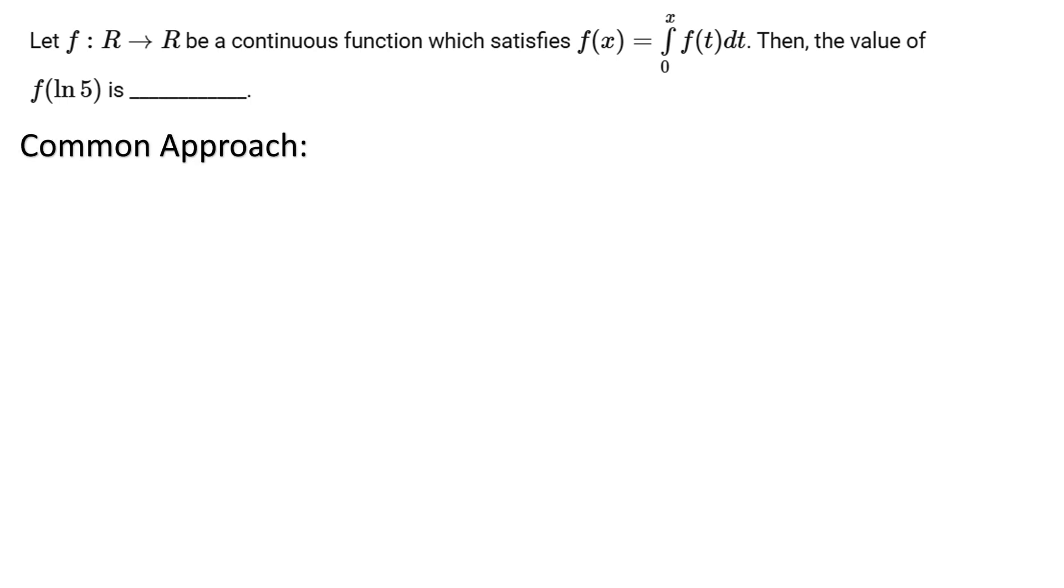What is the common approach for this question? The common approach is immediately to differentiate since we see a variable in the integral. So we simply differentiate to get f'(x) equals f(x), which gives us f(x) equals k times e to the power x. Since f(0) equals 0 when we put 0 on both sides, this means that f(x) must also be 0 since the value of k can be found to be 0.